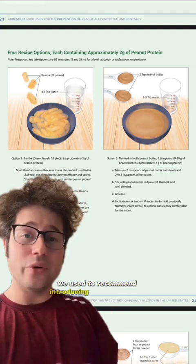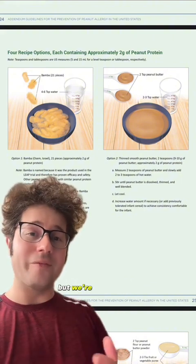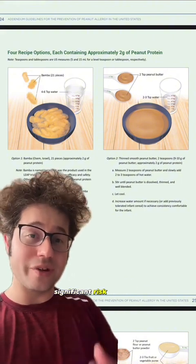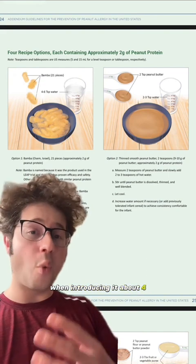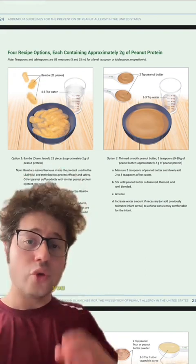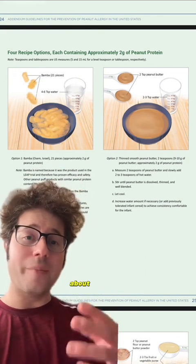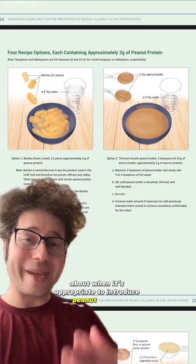We used to recommend introducing peanuts later in life, but we're finding that there is a significant risk reduction when introducing it about four to six months of age. You should first talk with your doctor about when it's appropriate to introduce peanut protein.